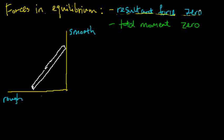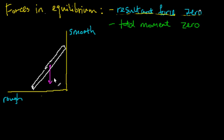Suppose this is a uniform ladder so that the center of gravity is at the center. This means we can think of the whole weight of the ladder as acting at this point. Recall that's how we understand center of gravity. So that's the weight — let's say the weight is 100 newtons.